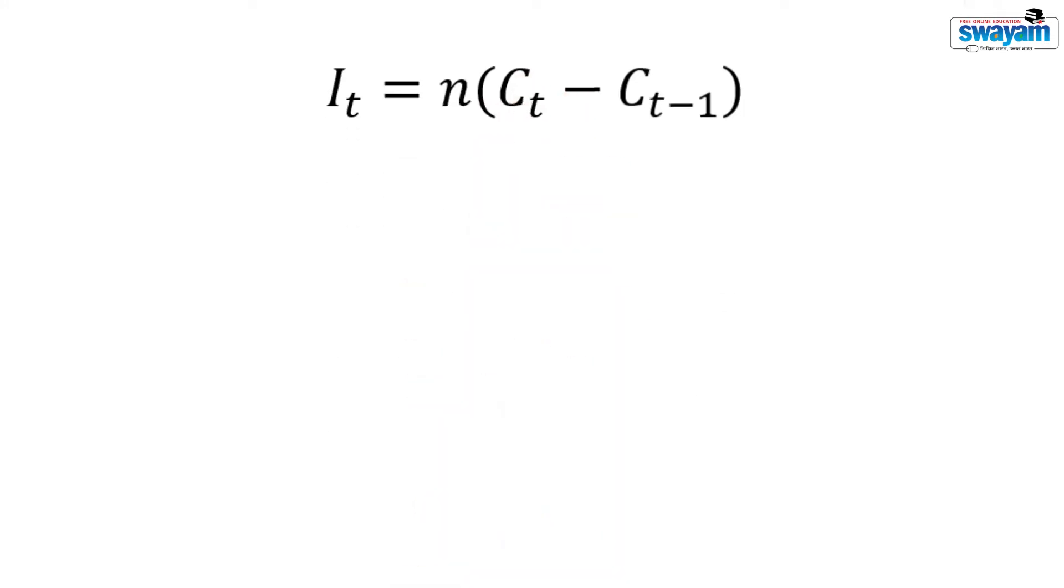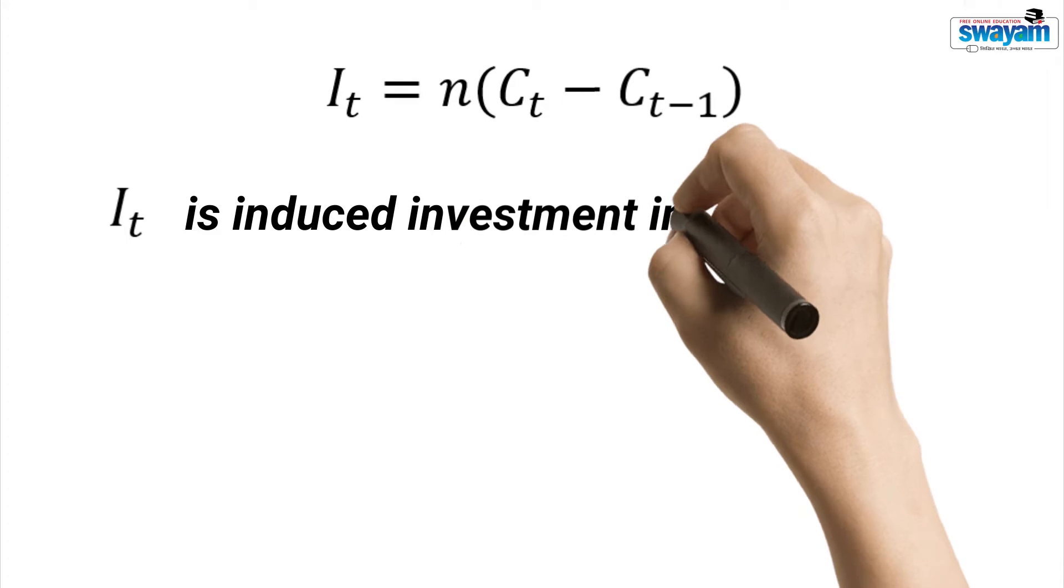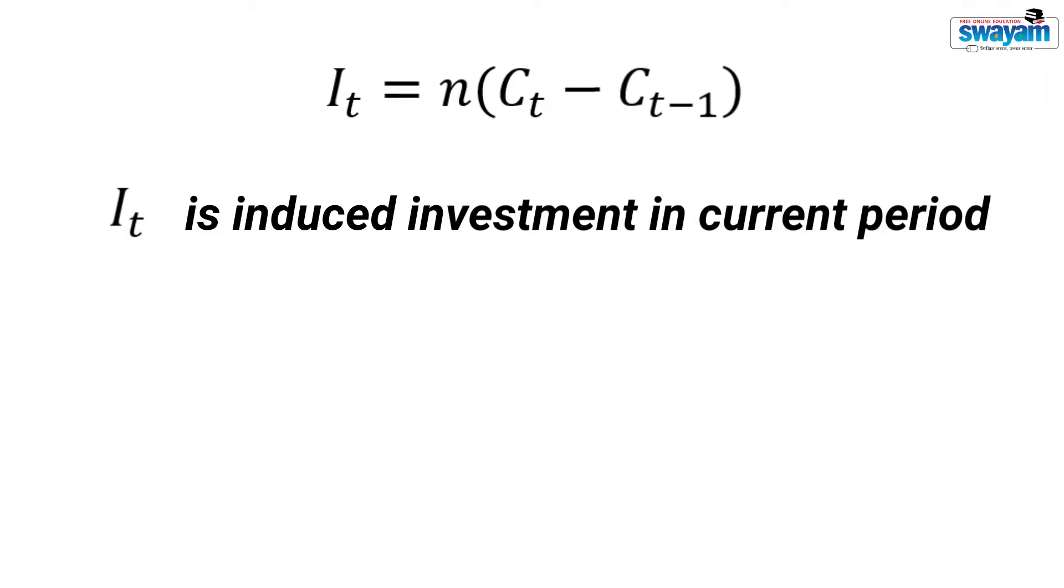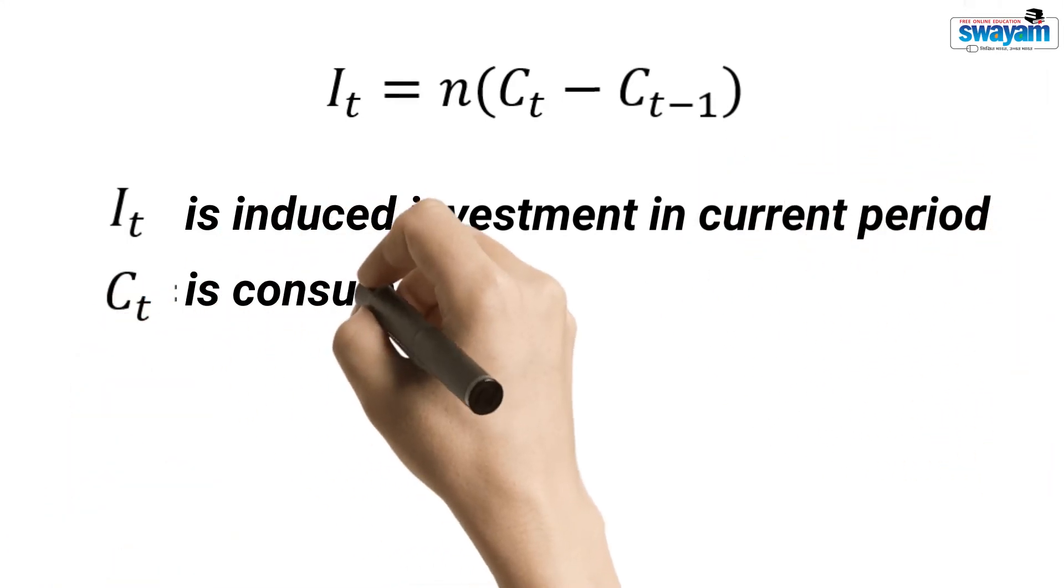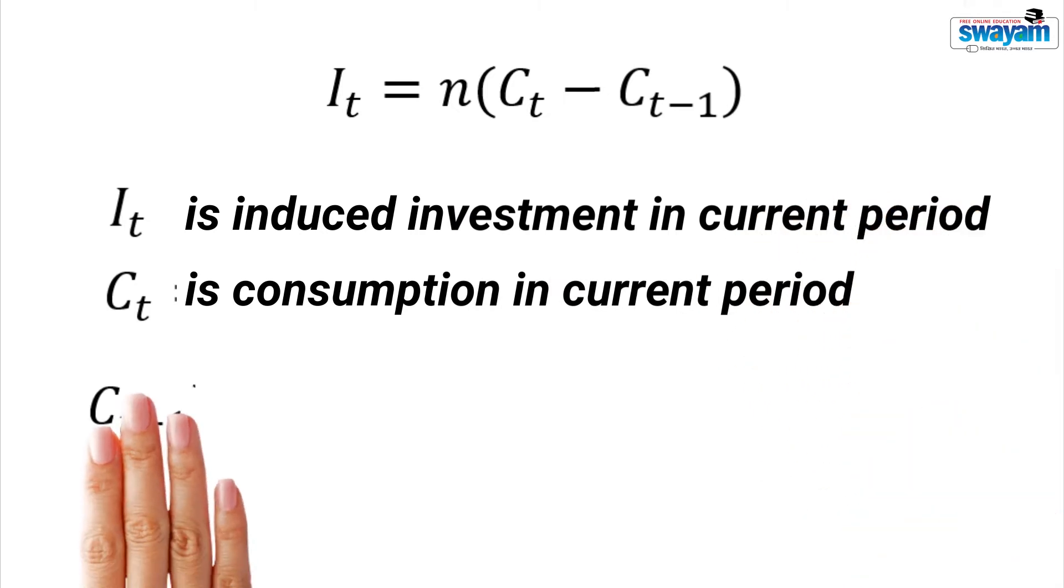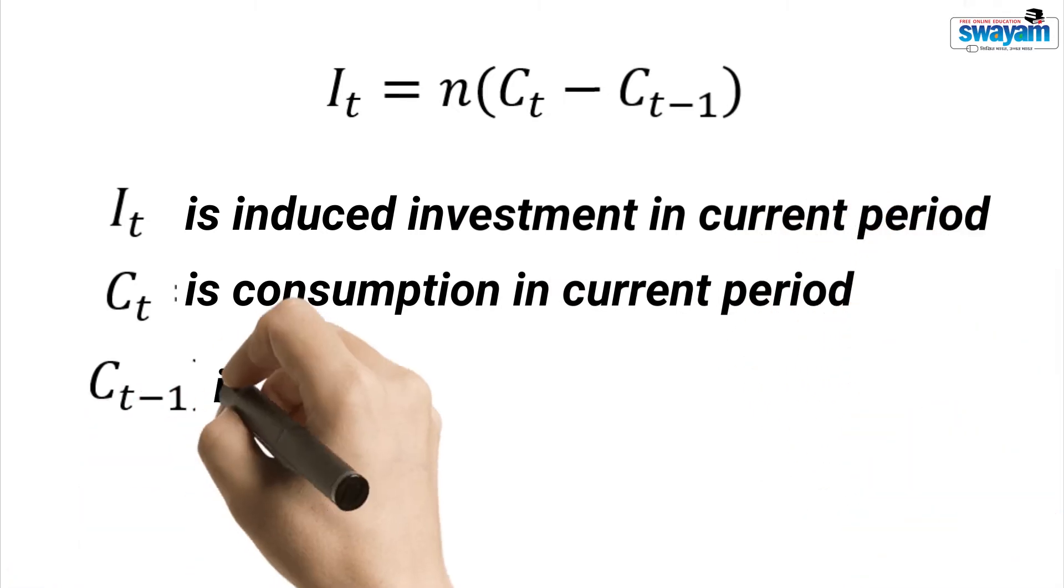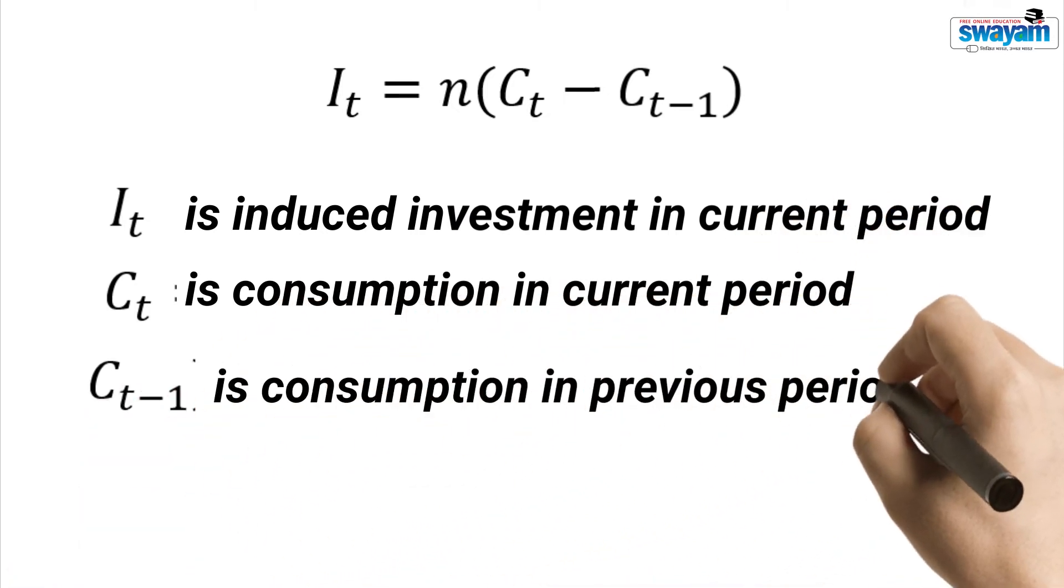Can you interpret this equation? Yes, investment in the current period is a function of the change in consumption in the current period and the consumption in the previous period. It is the induced investment. Ct is consumption in current period, Ct-1 is consumption in previous period, and N is the accelerator.